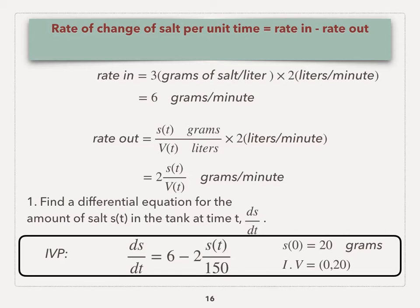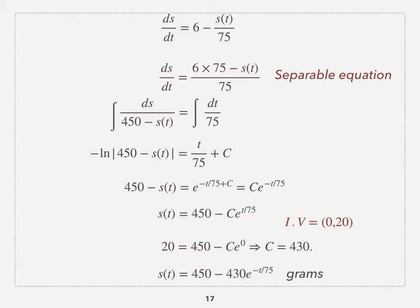Now we want to solve for this problem. We know that this is a separable equation if we combine 6 and negative s(t) over 75. Then you move s and ds to one side and dt to another side. Integrate both sides and you can find negative natural log of 450 minus s equals t over 75 plus C.